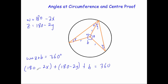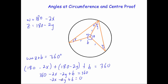Simplifying the left-hand side: 360 minus 2X minus 2Y plus B equals 360. Taking 360 off both sides leaves minus 2X minus 2Y plus B equals 0. Adding 2X and 2Y to both sides gives B equals 2X plus 2Y. Notice the angle at the top is X plus Y, and the angle at the bottom B is 2X plus 2Y.